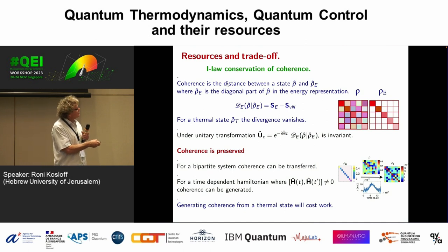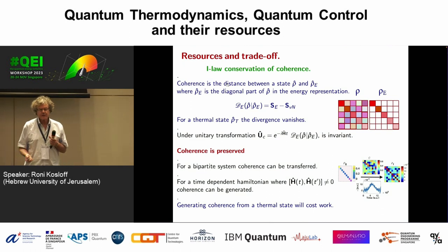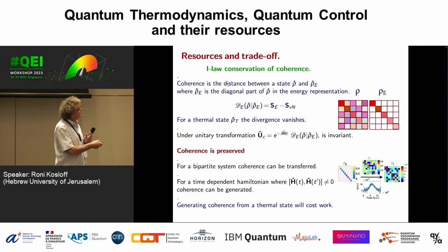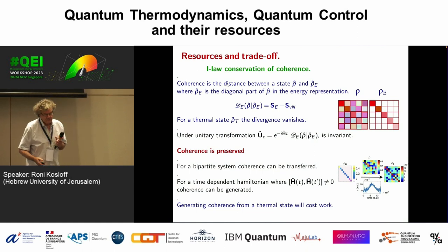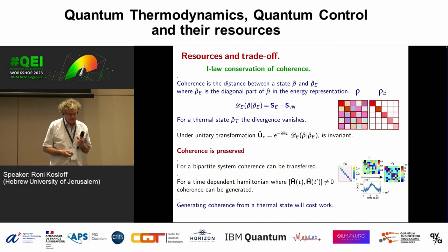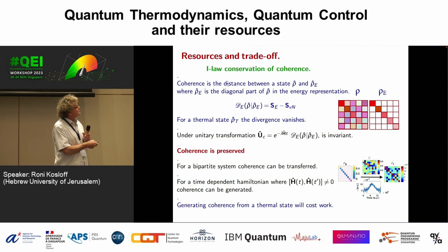Once we see this, if I change my system with a unitary whose generator is the Hamiltonian itself, it's not going to change the coherence. The von Neumann entropy is invariant to any unitary transformation, and the energy entropy is also invariant to a transformation generated by the Hamiltonian since it commutes with the energy representation. So this would be the first law of conservation of entropy: coherence is preserved under unitary transformation generated by the Hamiltonian.